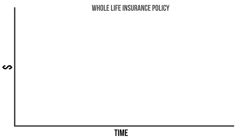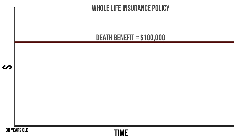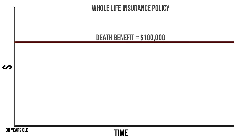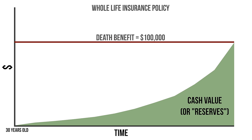Let's say we have a whole life insurance policy and the death benefit is $100,000. The person gets this policy when they're 30 years old. This horizontal line represents their death benefit. If they die and their policy is in force, their beneficiaries get the $100,000 as promised. But the cash value or reserves build up over time.